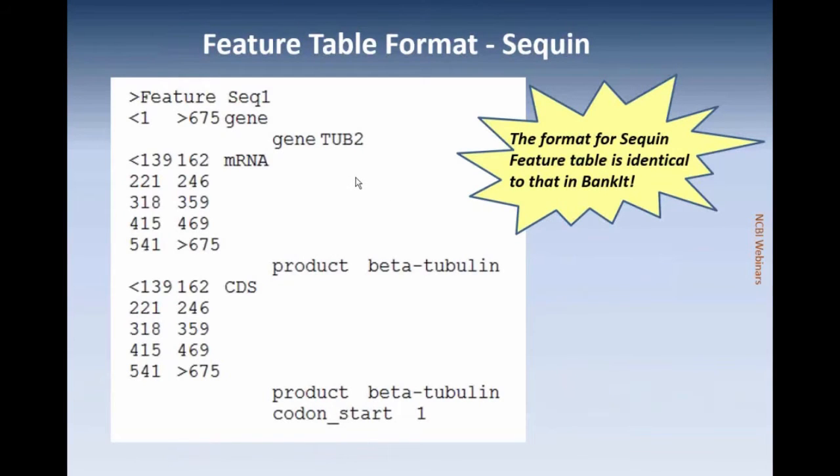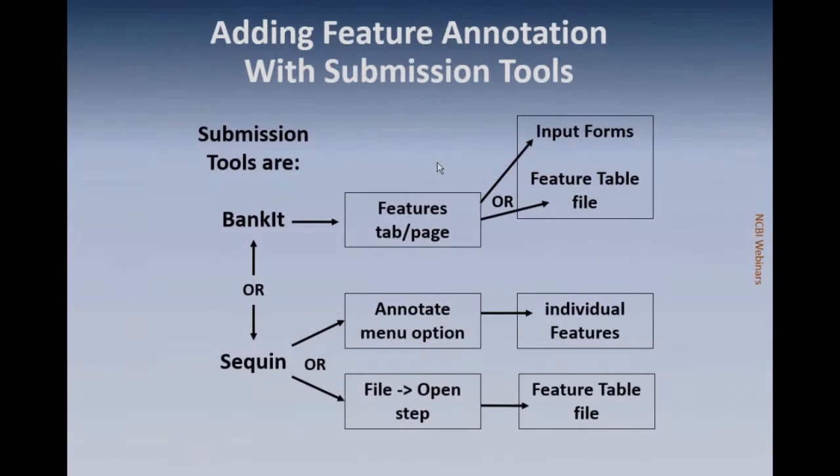The feature table format is the same for both Sequin and BankIt. So you can use one of the two submission tools, and depending on your data, you may find one path would be easier or more efficient than the other path.